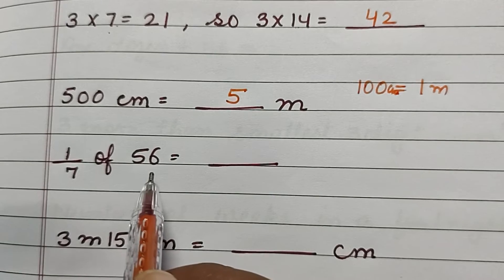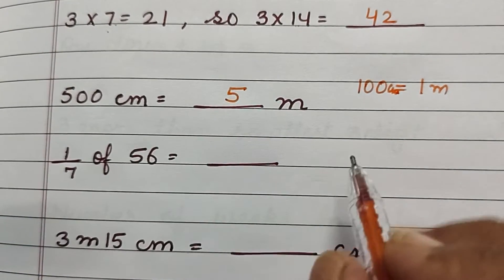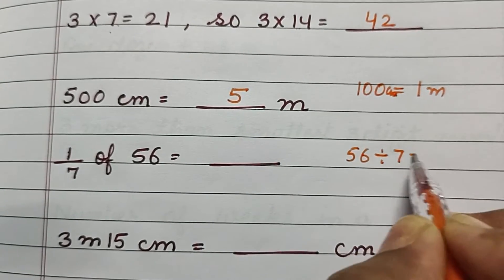1/7 of 56. To find out 1/7 of 56, we have to divide 56 by 7 and we will get 8, so 8 is our answer.